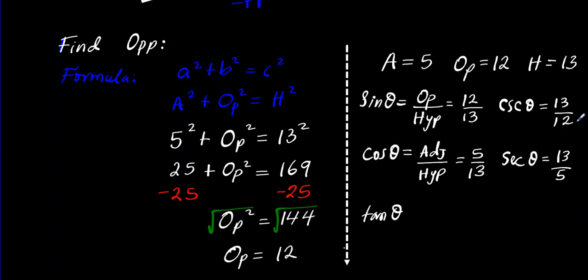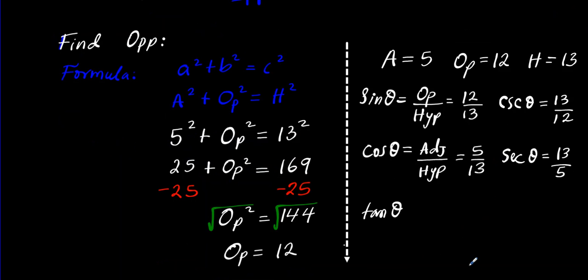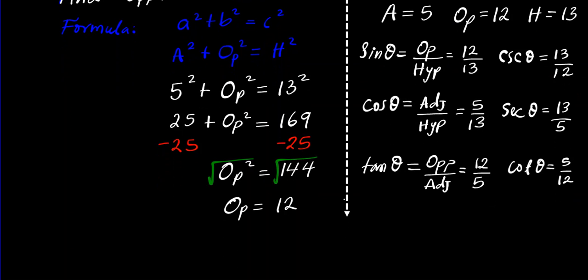Let's find the last two. To find tan theta we're going to use TOA in SOH-CAH-TOA. TOA means that tan equals the opposite divided by the adjacent. The opposite is 12 and the adjacent is 5. When you reciprocate tan you get cotangent, so you get 5/12 as your result for cotangent theta.